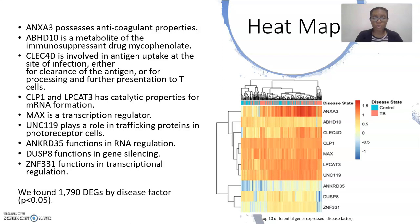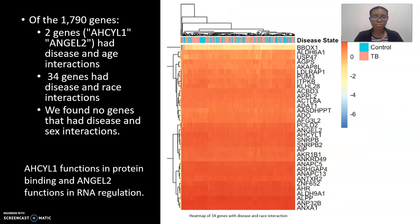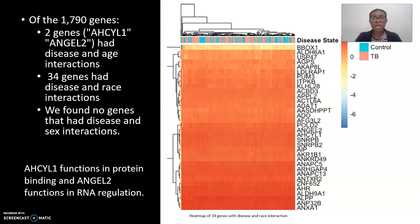ZNF331 functions in transcriptional regulation. We found 1,790 differentially expressed genes by disease factor. Of those 1,790 genes, two genes — ASO1 and ANGEL2 — had disease and age interactions. ASO1 functions in protein binding and ANGEL2 functions in RNA regulation. There were 34 genes that had disease and race interactions, shown in the heat map to the right. There were no genes that had disease and sex interactions.